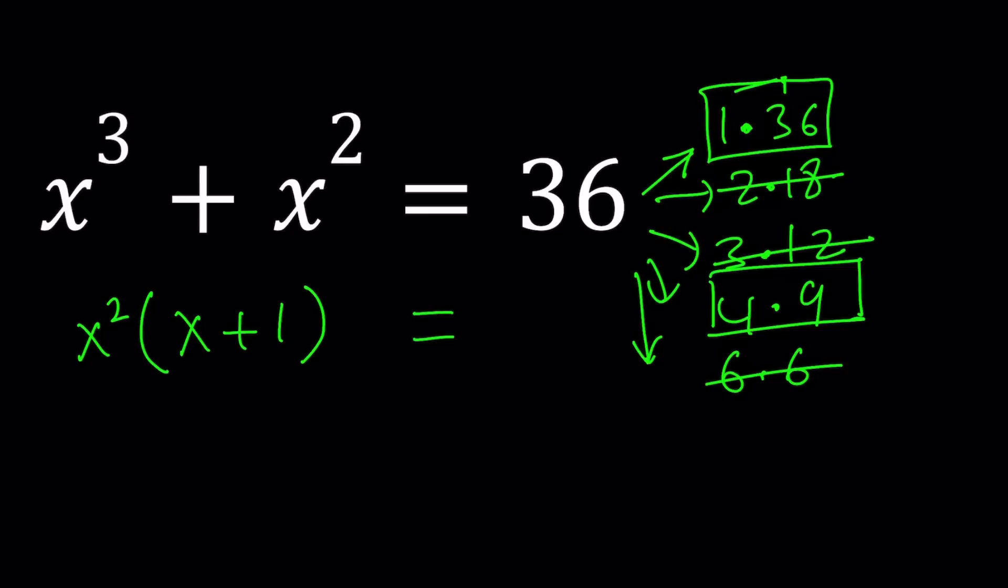If you look at the first one, there's two possibilities. Either x squared is 1 or 36. If x squared is 1, that means x is 1. But then x plus 1 has to be 36, which means x has to be 35, which makes no sense.